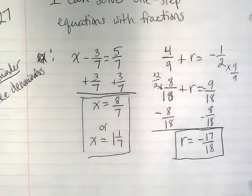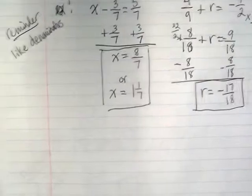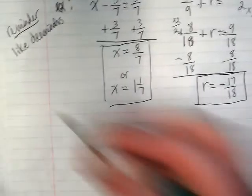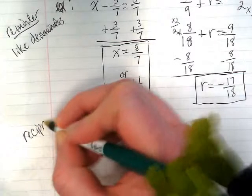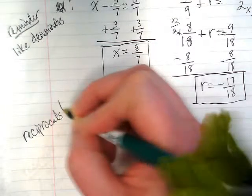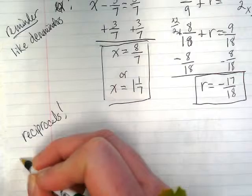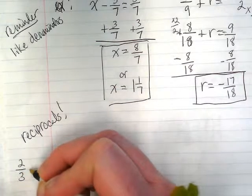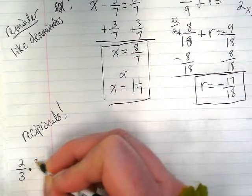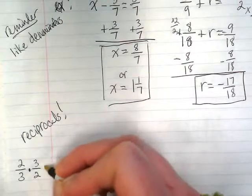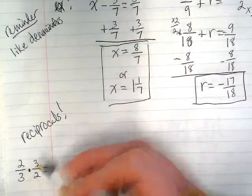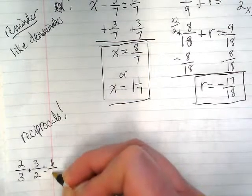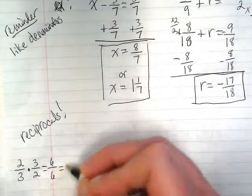Next, we're going to do some examples with multiplication and division, and reciprocals are important here. Remember, if I have a reciprocal of 2 thirds, it would be 3 over 2, because a reciprocal is the opposite of the first one, so that when I multiply them together, I end up with a fraction that equals 1.